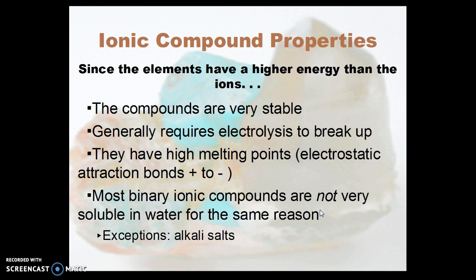Since elements have a higher energy than their corresponding ions, these compounds are low energy and stable. Both the metal and the non-metal lose energy to become the ions. That means it requires melting the salt and running a strong DC electric current through it — electrolysis — to break them back up into their metal and non-metal elements.